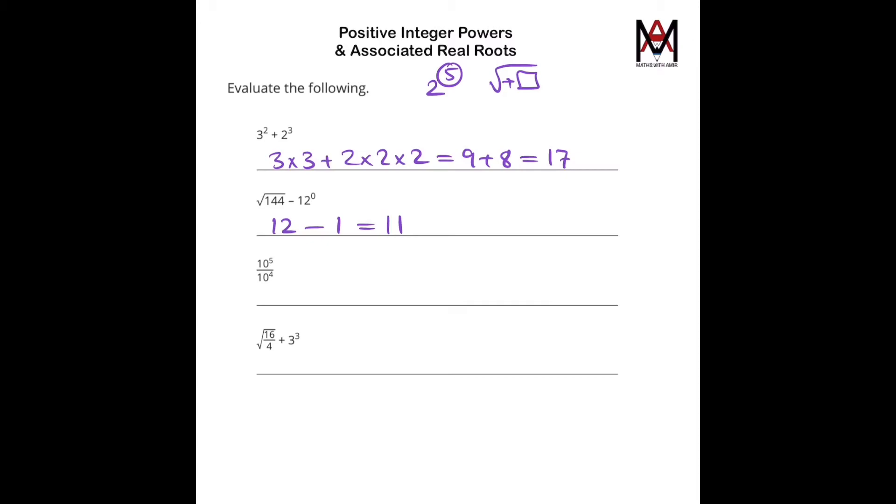The next question, 10 to the power of 5, over 10 to the power of 4. So we have 10 to the power of 5 divided by 10 to the power of 4. The bases are the same. When that happens, we can just take away the powers from each other. That equals to 10.